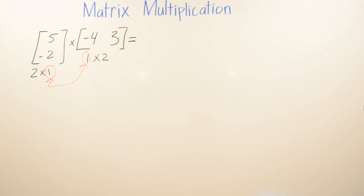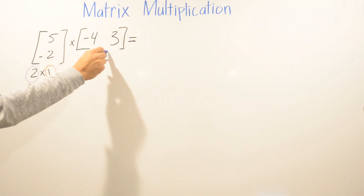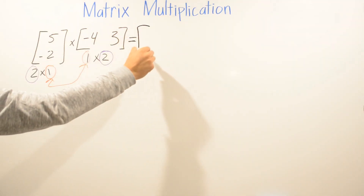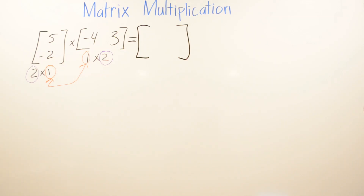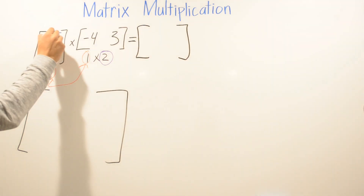Now we find out what kind of matrix the result will be. We take the first number of the first matrix and the second number of the second matrix — that's a 2 and a 2 — so the result is going to be a 2 by 2 matrix.